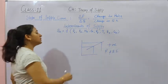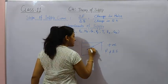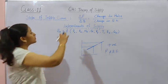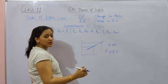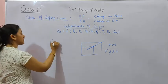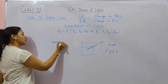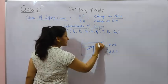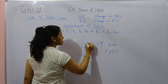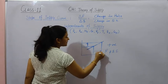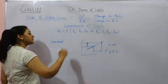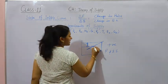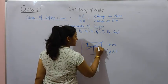Now, look at the supply curve — it is a straight line. A straight line shows that the ratio is constant. At every level, the same ratio is maintained — the same value of price is rising at a constant rate.